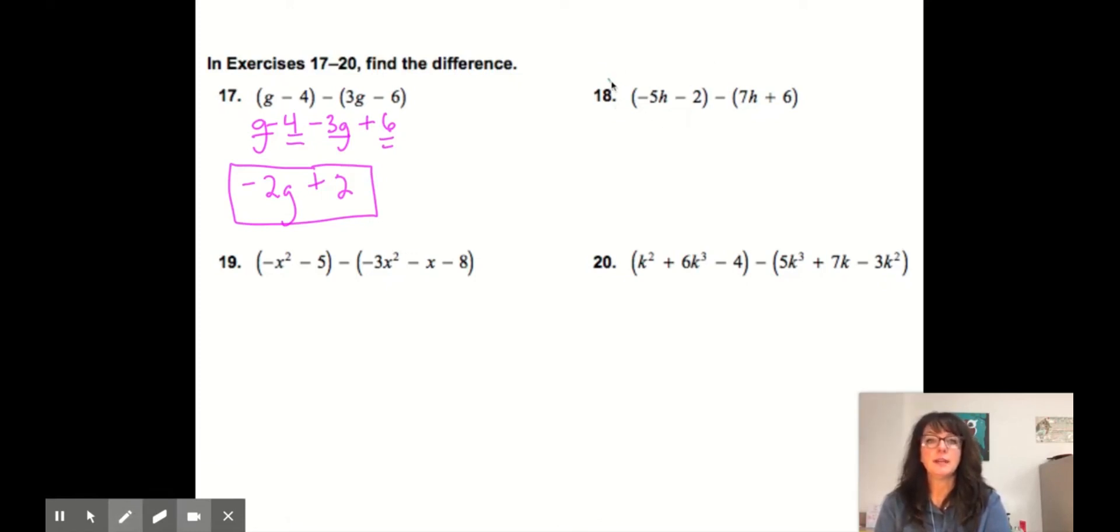I'll let you do number 18. And I'll go down to number 19. So I'm going to rewrite. So the opposite of a negative 3 is a positive 3x squared. Positive x and positive 8. I changed the sign because they all precede the negative. Now the exponent of 2 becomes my first term.